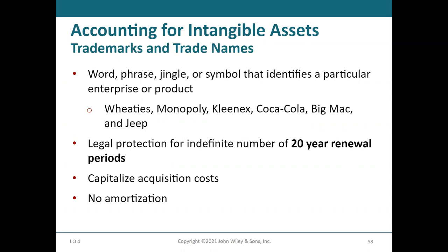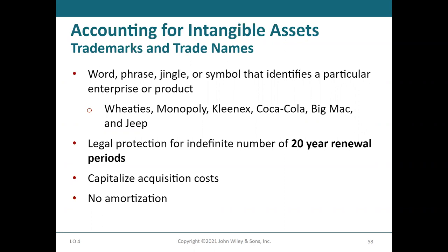Trademarks and trade names — like the McDonald's golden arches, the Coke symbol, or the Pepsi circle — are considered trademarks. They get legal protection for 20-year renewable periods and can be indefinite. Your ability to lock out the McDonald's name doesn't go away, but you must renew every 20 years. What you record is whatever you paid to acquire that trademark or trade name, and those do not get amortized because they are renewable.